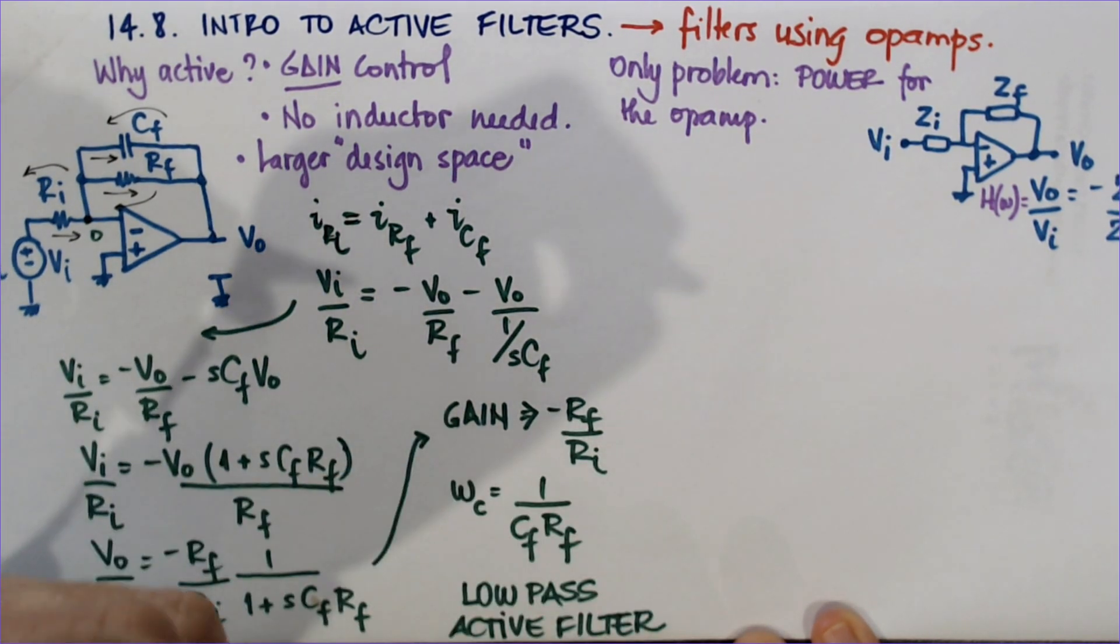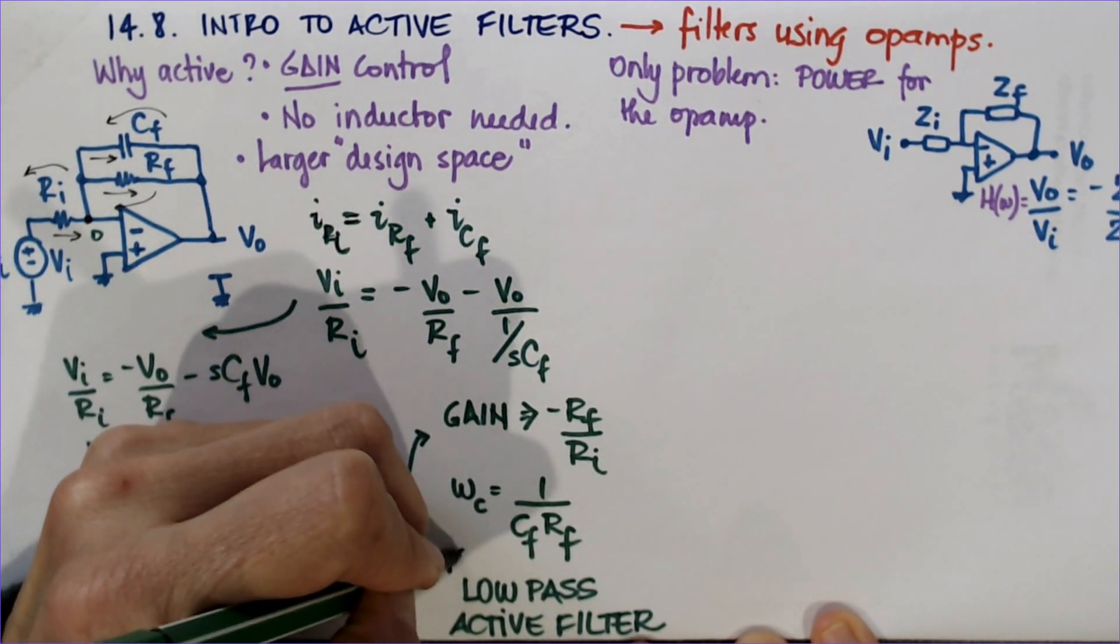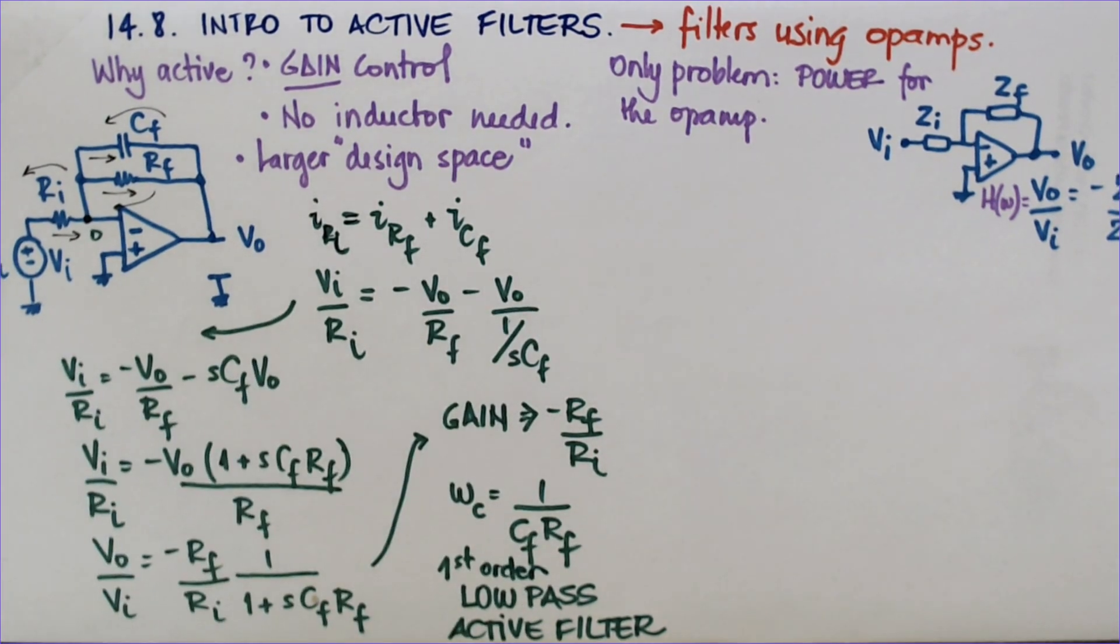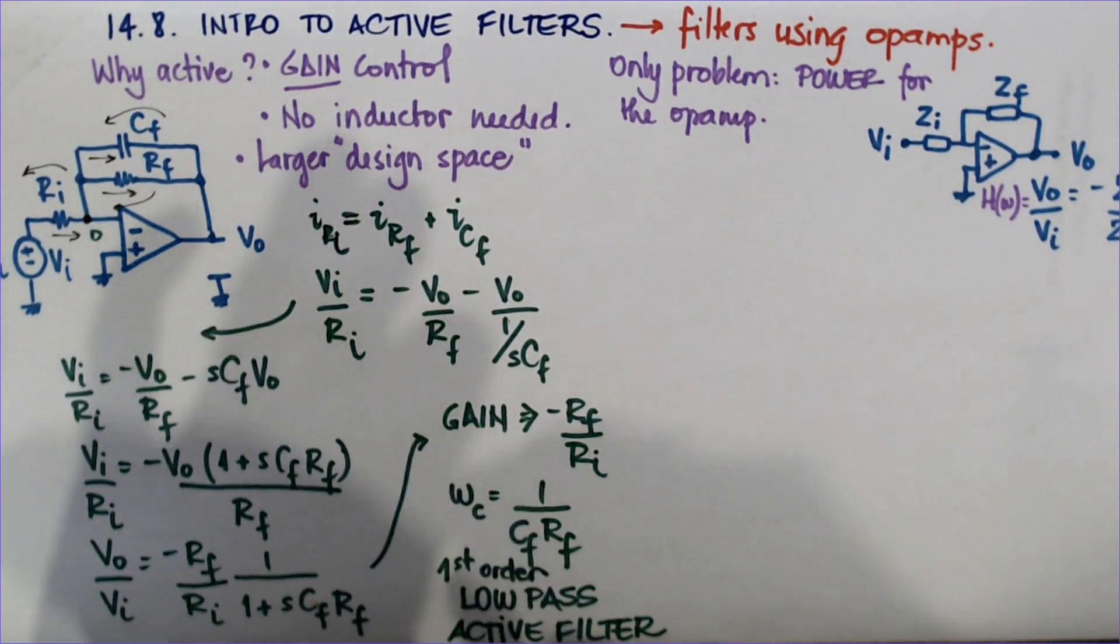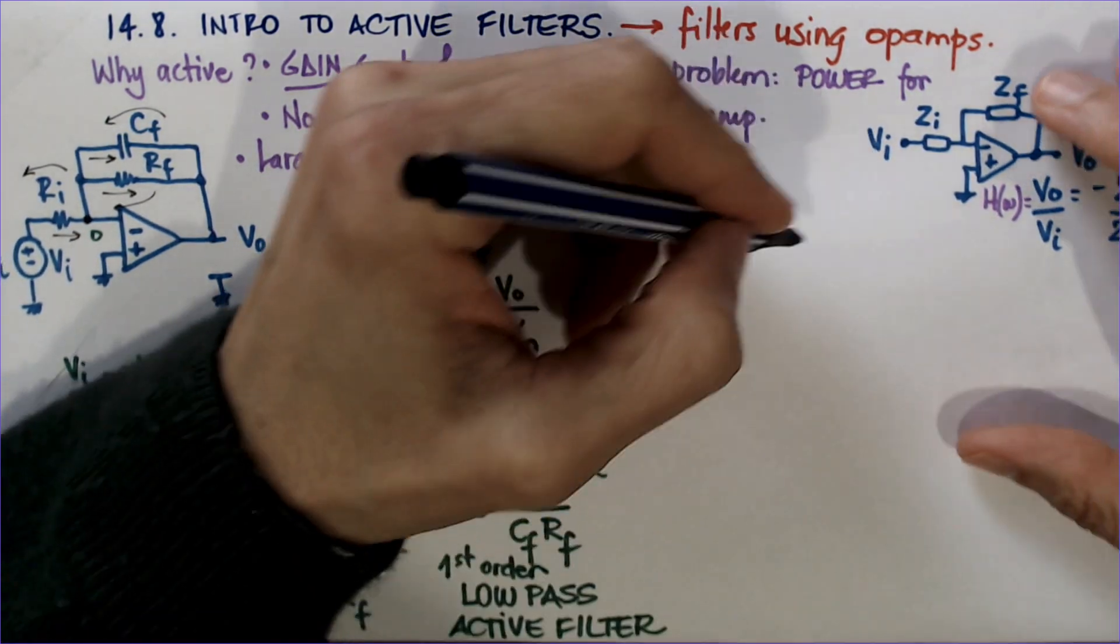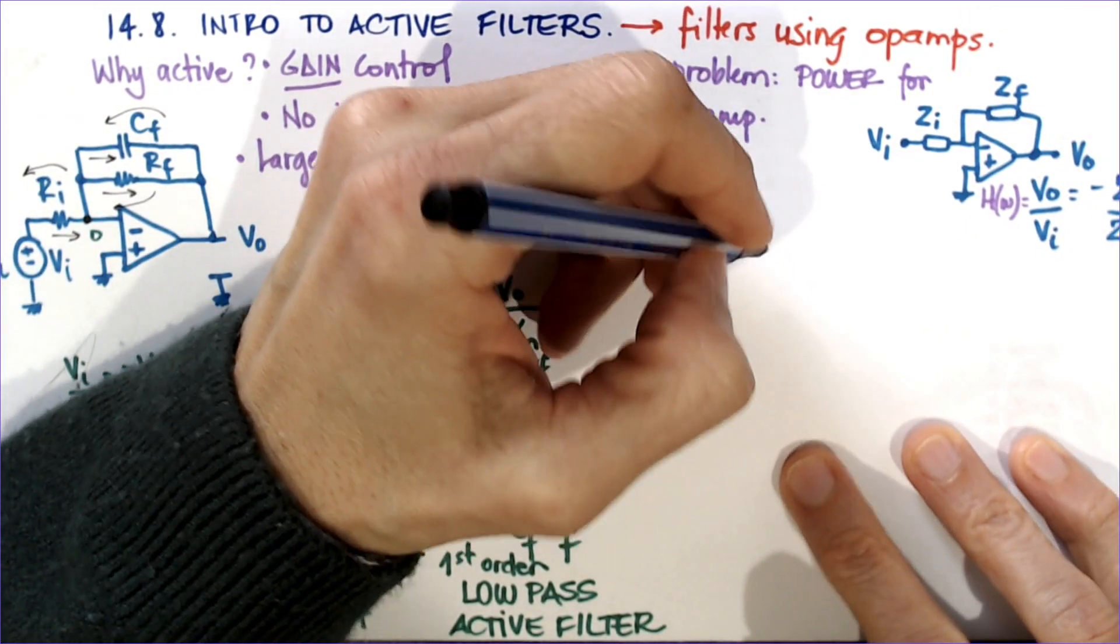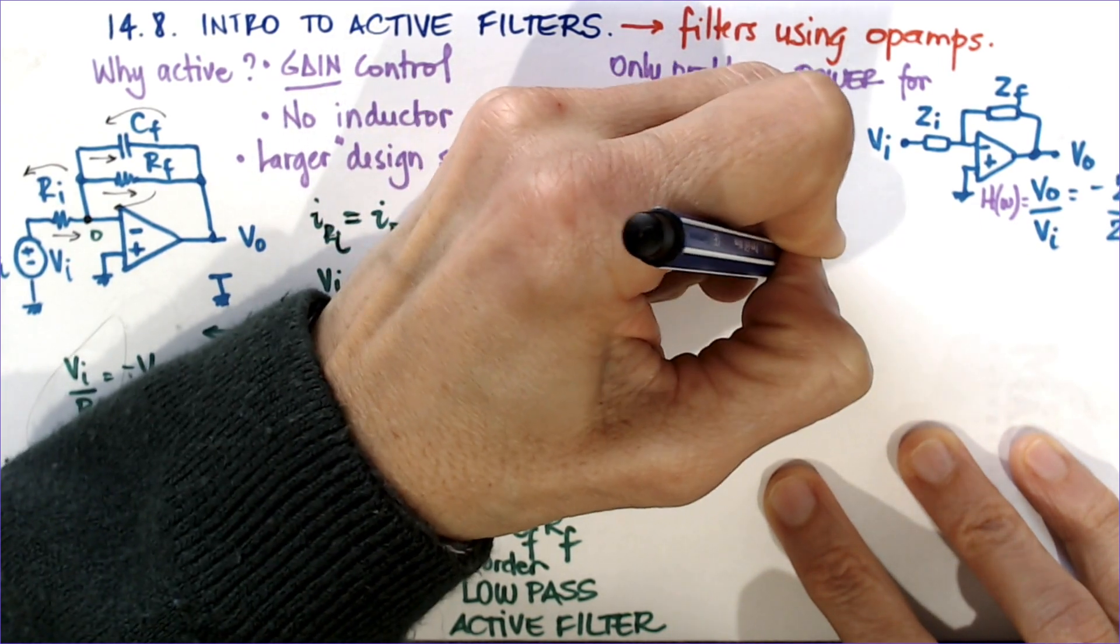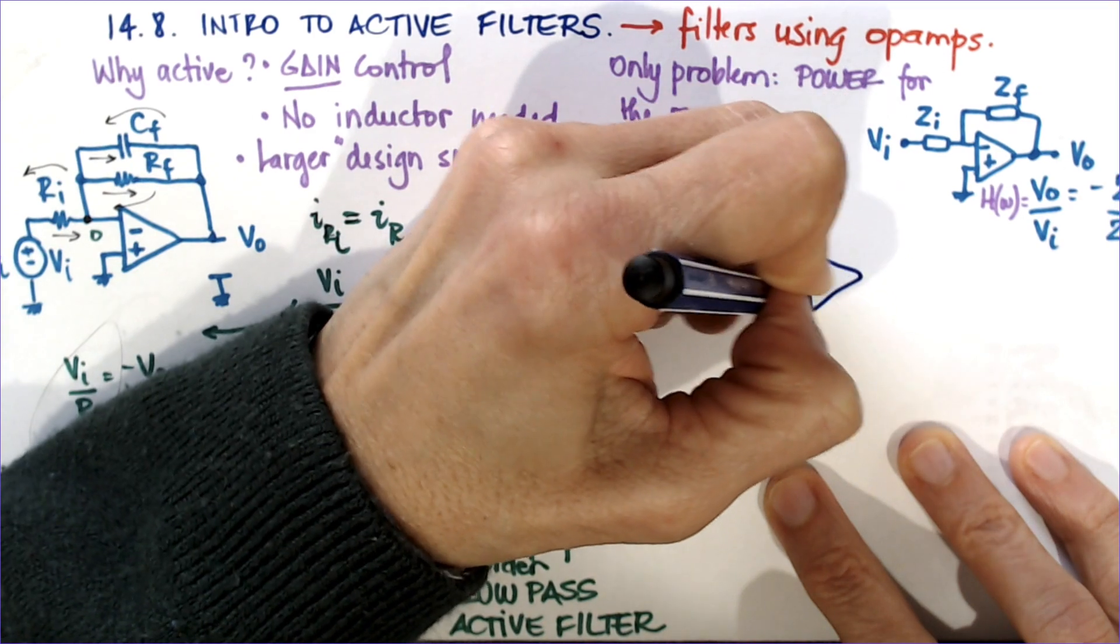And it has one pole. So this is a first-order low-pass active filter. I will let you, it's already a seven-minute video, really long. I'll let you solve, and I think the book must have also this as a solved example.